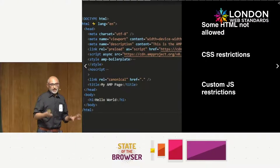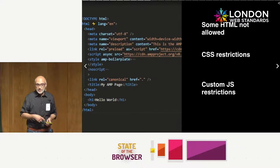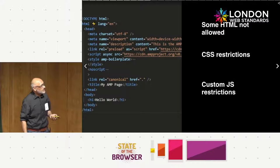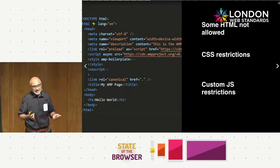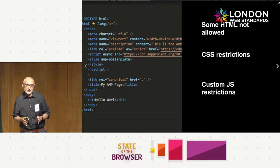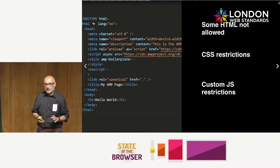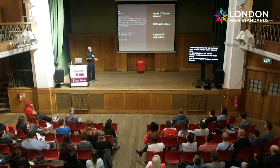Having the building blocks doesn't get you all of AMP's benefits - you have to follow the rules to have a valid AMP page. There's a little boilerplate that goes in your markup. The three main rules: some HTML is not allowed, mainly elements that load resources like video and image. There are CSS restrictions - ultimately the final output of your CSS has to be one inline style tag at the head of the page, with other restrictions like no use of !important in some cases. The biggest one is custom JavaScript restrictions - you're not allowed a script tag, and until recently, no custom JavaScript at all.